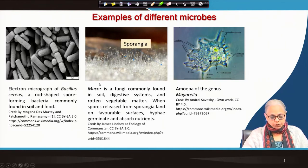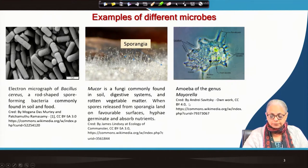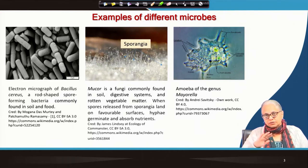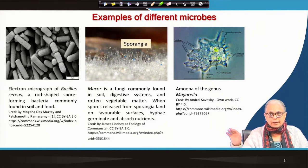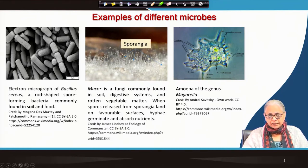In the second graphic you can see a fungi — this is Mucor. Mucor is very common; it's a mold that grows on food. It is found in soil, digestive systems, and rotten vegetable matter. From experience, if you leave anything out on the table when the weather is warm and humid, within 24 hours you will find growth of a fuzzy layer at the surface of the food.